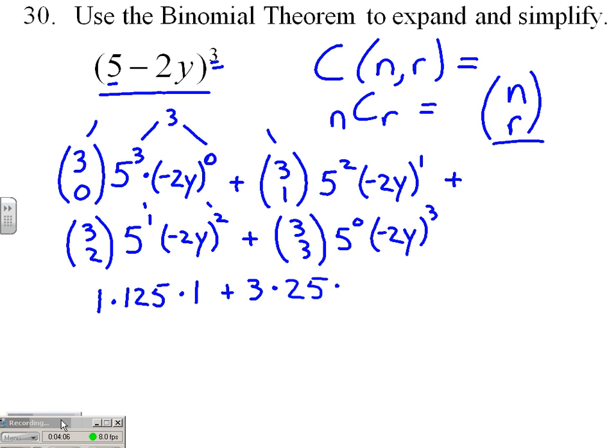Times 1(-2y). Plus our third term: C(3,2) is also 3, times a single 5, but (-2y)² is positive 4y².